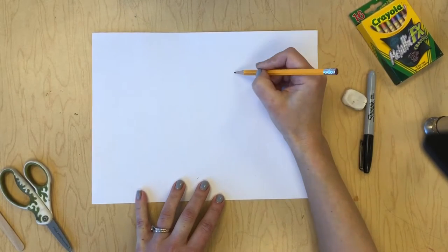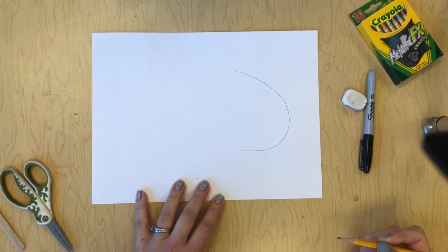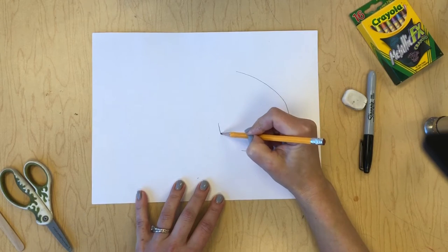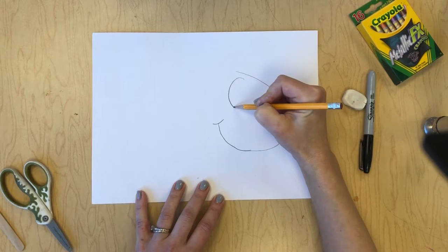I'm going to start by making the face of my fish using a C shape. Make sure that you leave enough space for the rest of your fish's body. Now add its mouth and a nice big eye.